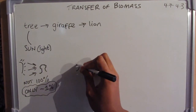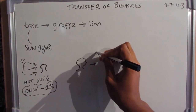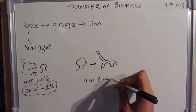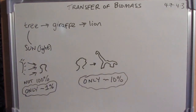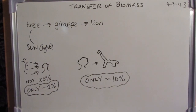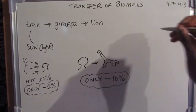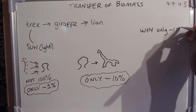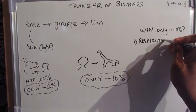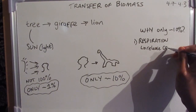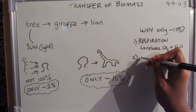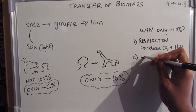From that 1%, how much is available for the giraffe — or the next trophic level — is around 10%. So 10% of the energy the tree has is able to go to the next trophic level. Why only 10%? The tree needs to carry out respiration — glucose + oxygen → carbon dioxide + water — which releases energy as carbon dioxide and water, so that energy is not available for the giraffe.